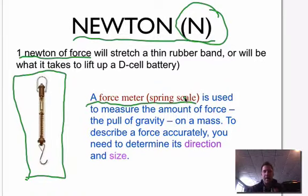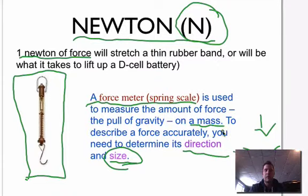So now we're going to take a mass. If I take this remote for example, this is a mass. I could attach it to a spring scale and measure the amount of force on the spring scale or force meter that is exerted on this particular mass. To describe force accurately, you need to determine two things: the direction and the size. Where is the force being placed? Is it coming from top to bottom or from below? And what is the size of the object or the mass?